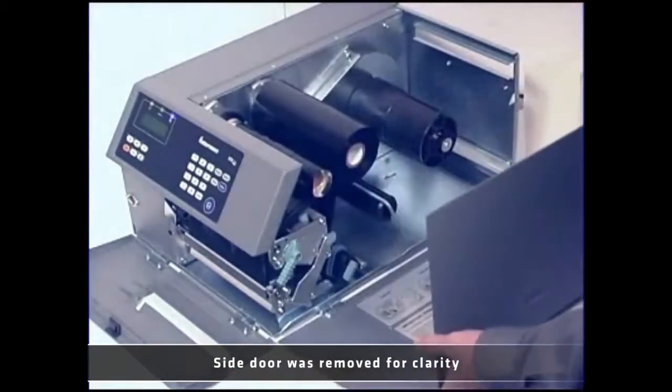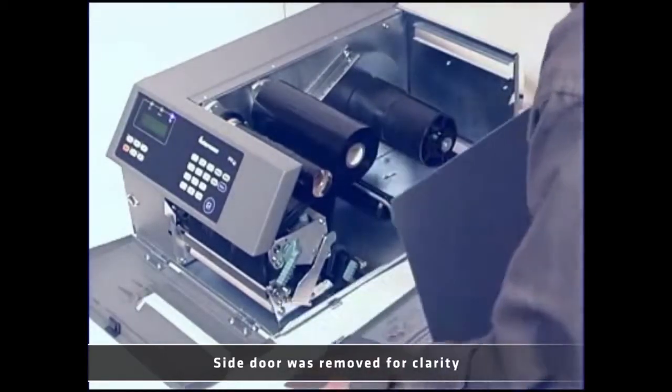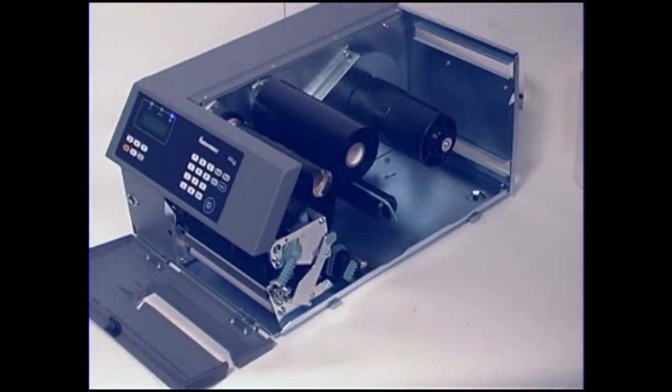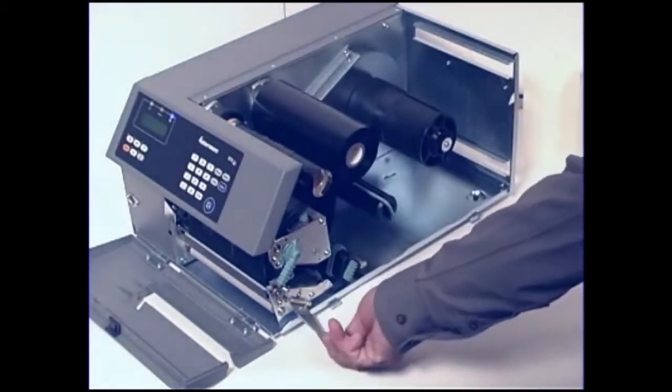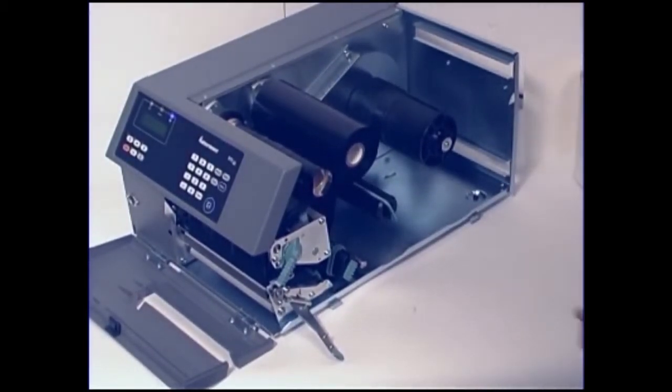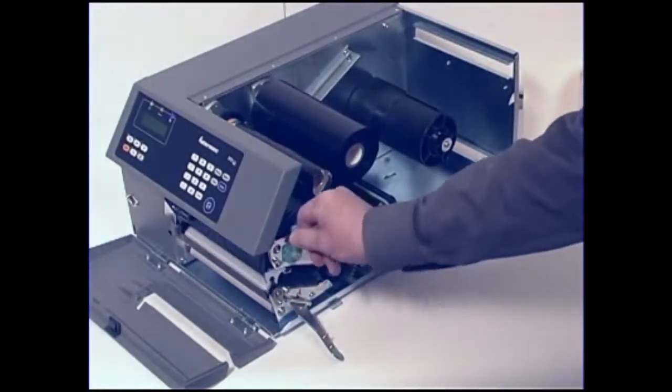Start by opening the front door and media cover. If you are installing the media on a PX6i model, you will need to pull down the locking handle. This does not apply to the PX4i or PA30 models. Turn the printhead lift lever counter or anti-clockwise to raise the printhead.